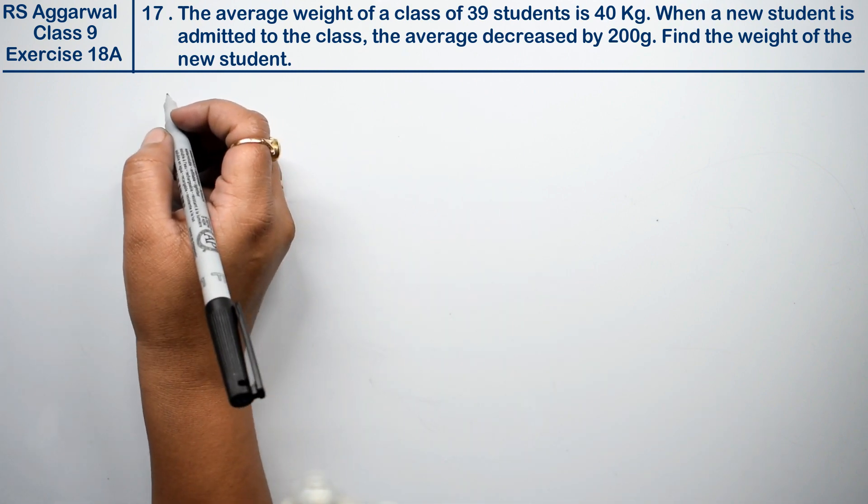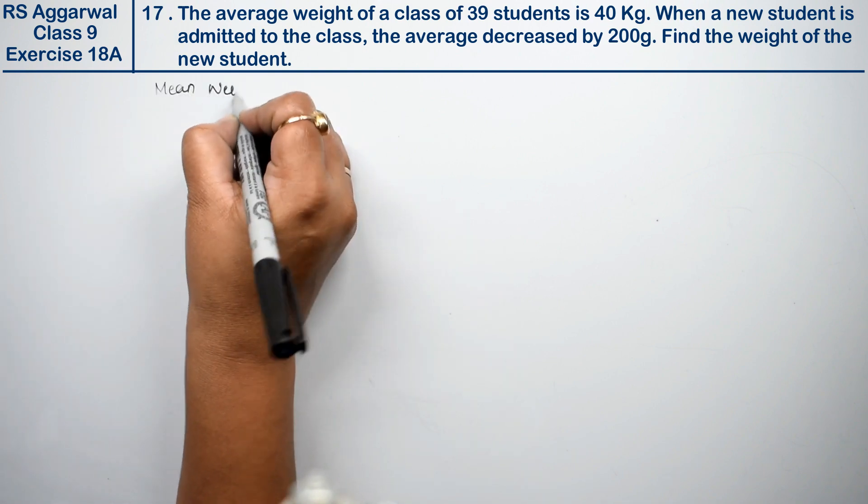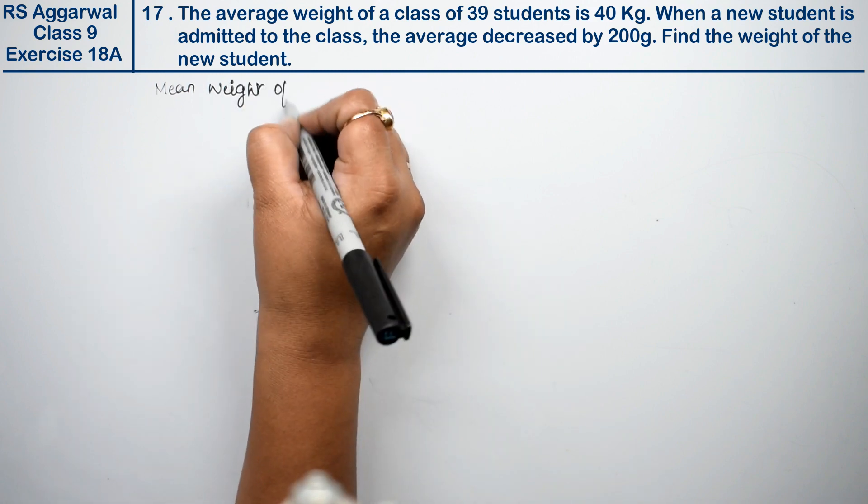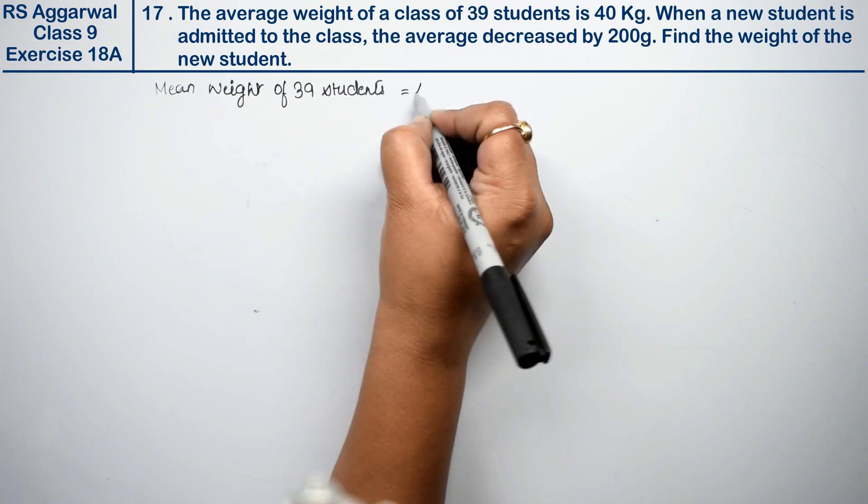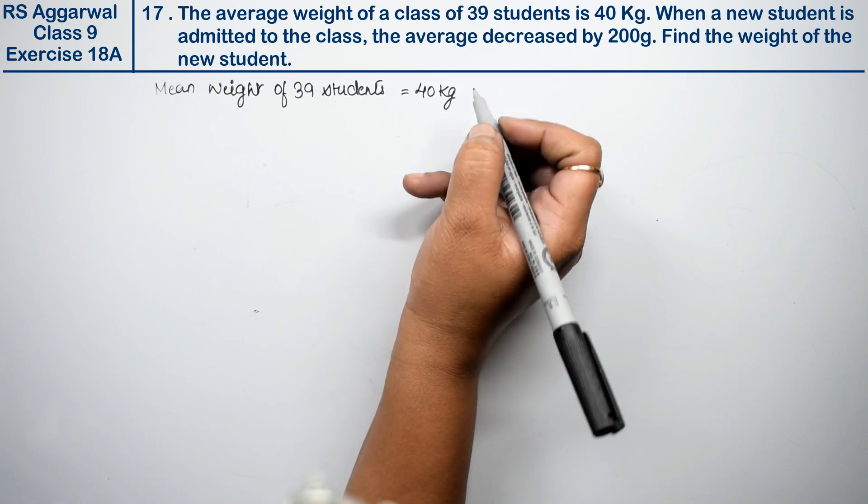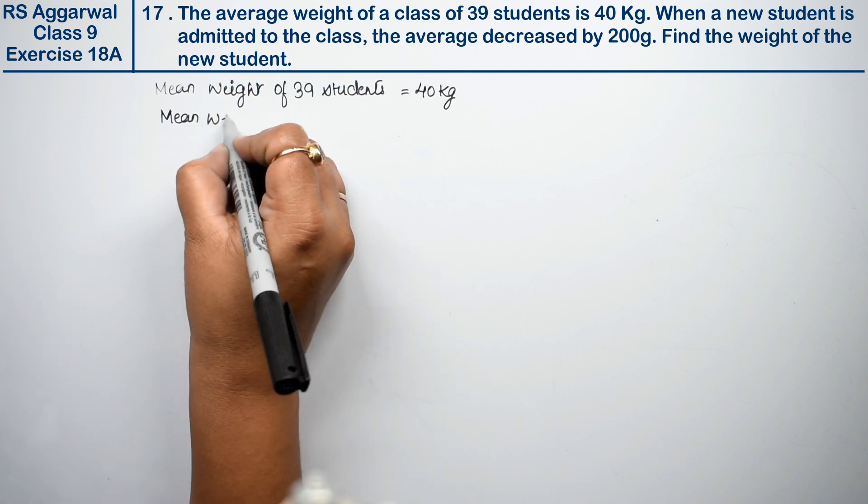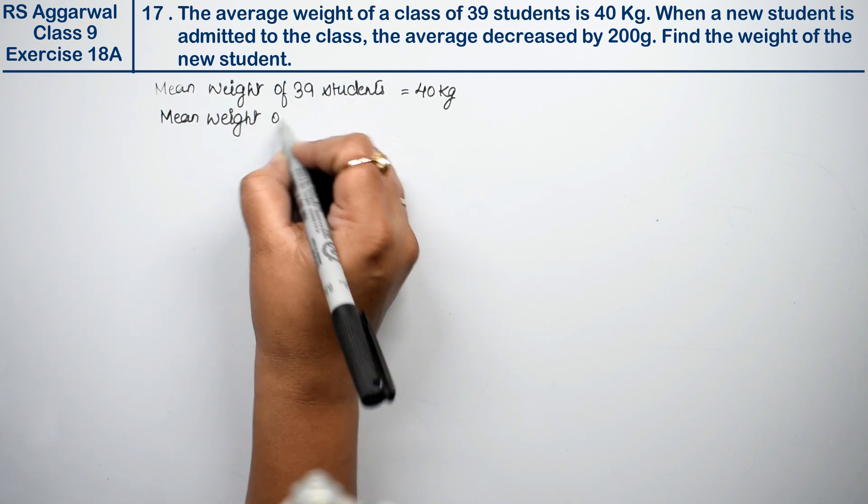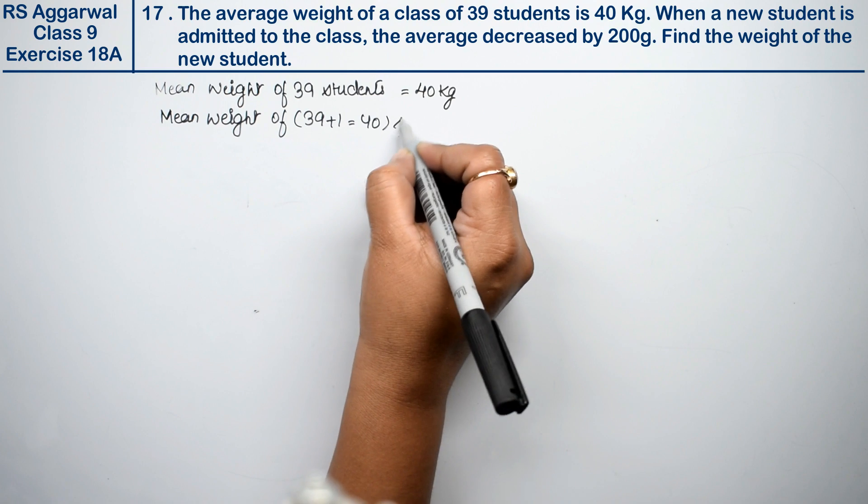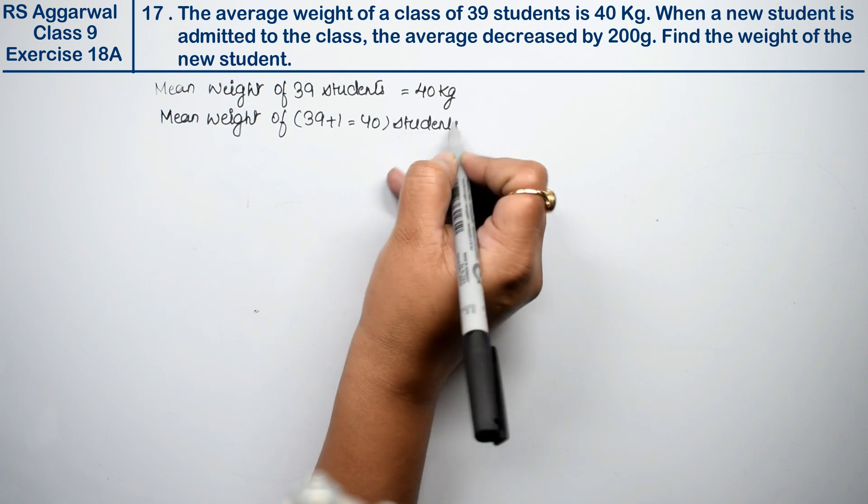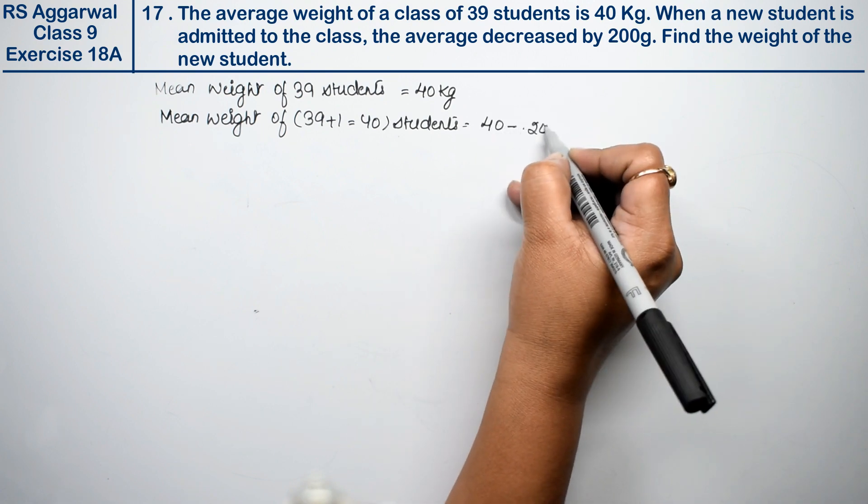Mean weight of 39 students is 40 kg. So mean weight of 39 students equals 40 kg. Right? Now what happened? One student came. So what will be the mean weight?